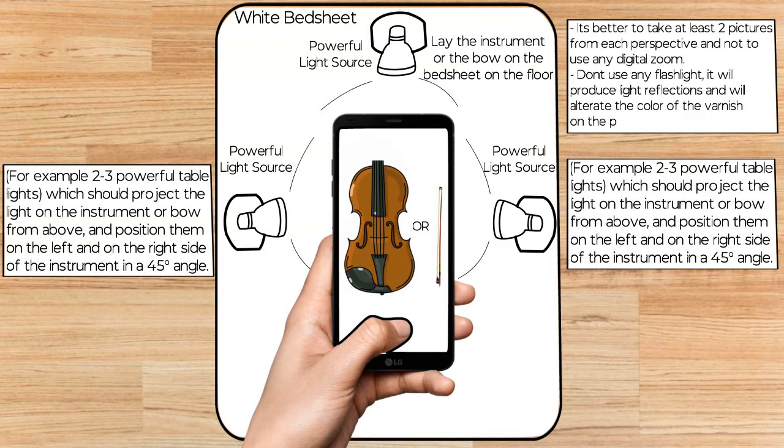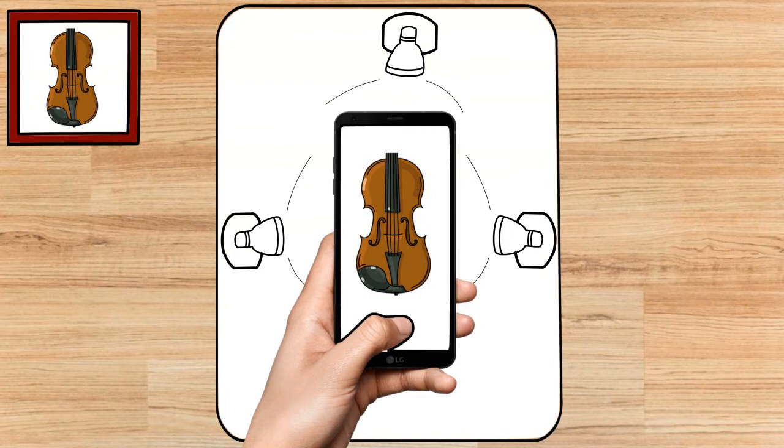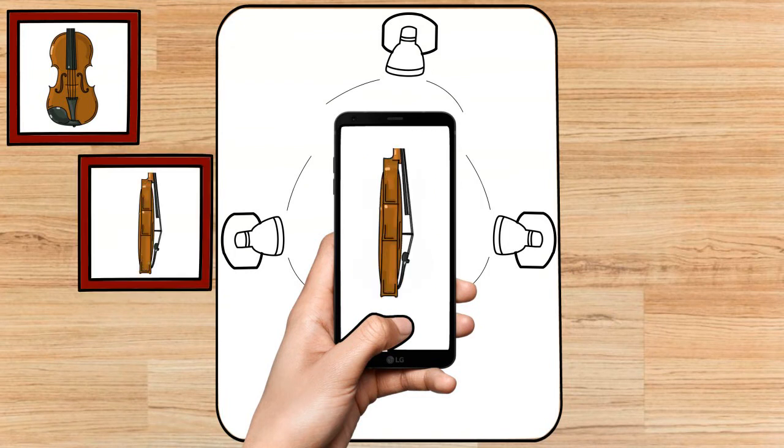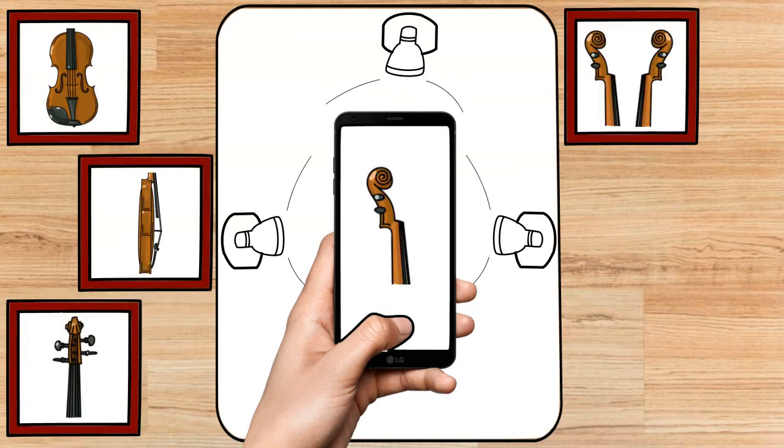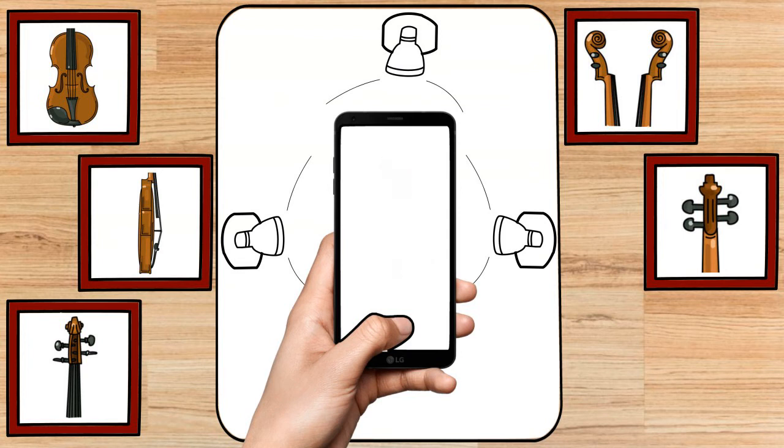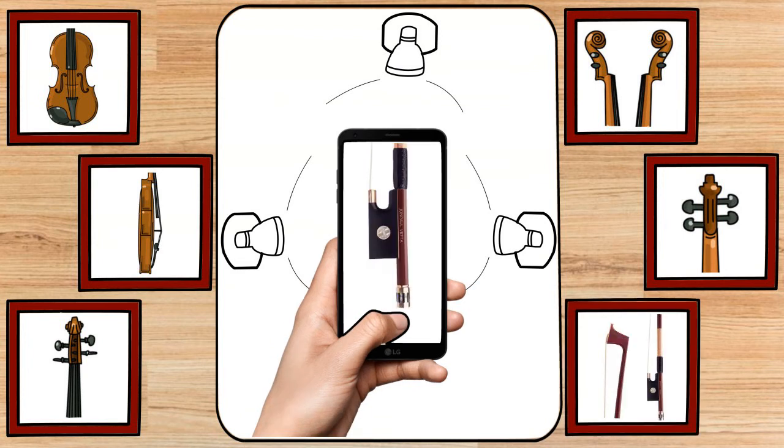On the pictures we need for instruments: frontal views, plus full instrument side views, and scroll head front, both sides, and back. We need tip and lower part views of the bow. It will be good if you can get some pictures of the bow stamp name if any available.